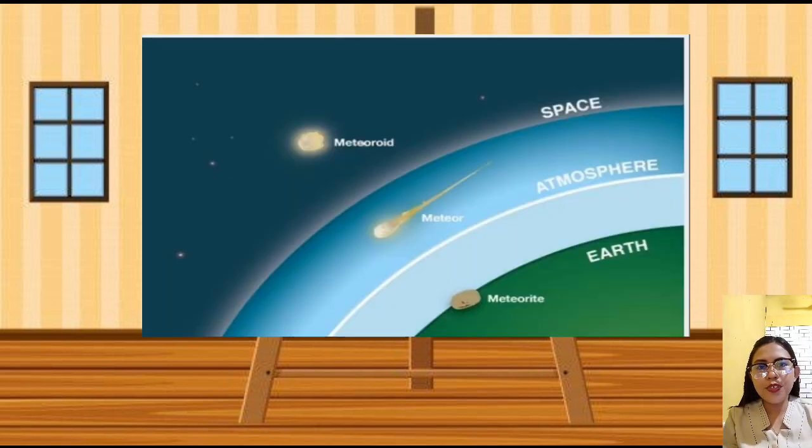Here is an illustration of the sequence of meteoroid, meteor, and meteorite. When the rock fragment coming from either comets or asteroids is in space, it is called a meteoroid. When that rock fragment enters the Earth's atmosphere, it is called a meteor. And when the meteor survives and enters the Earth's surface, it is now called a meteorite.